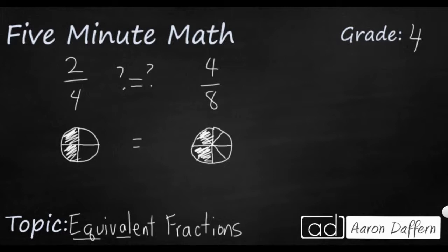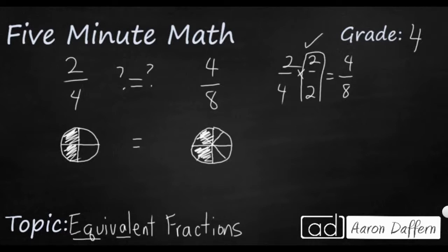Another way to look at it is the relationship between the numerators and denominators. If you multiply two times two, you get four — you can multiply straight across. And if you multiplied four times two, you would get eight. So since you can multiply the top and the bottom, the numerator and the denominator, by the same number — in this case, multiply both by two — this also shows that it is equivalent.